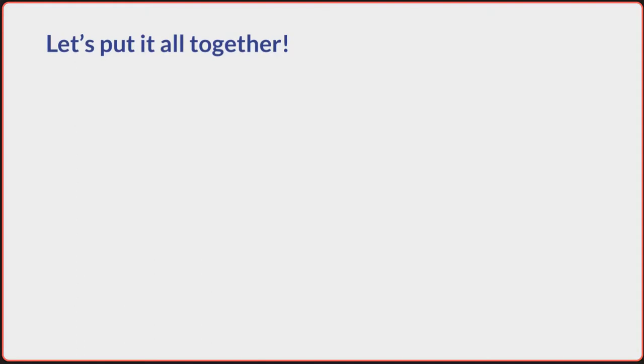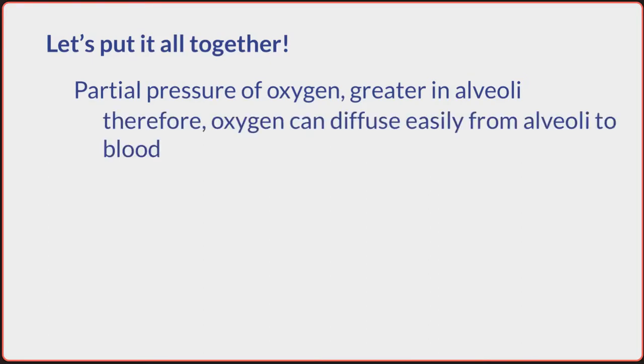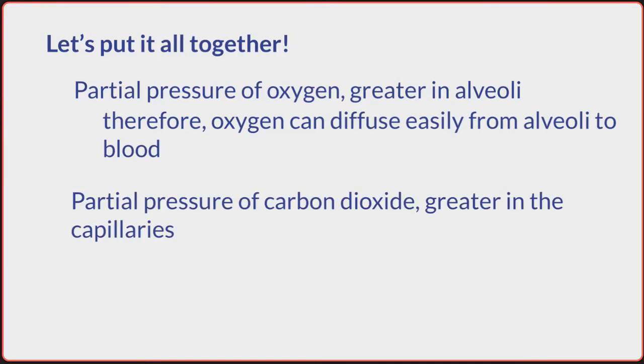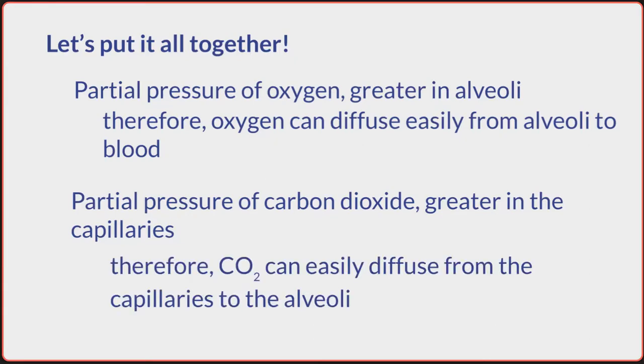So the basis for this gas exchange that occurs within the lungs is that the partial pressure of oxygen is greater within the alveoli, and so oxygen can move from the alveoli to the blood to be then carried on to the rest of the body. And the partial pressure of carbon dioxide will be greater in the blood because this is deoxygenated blood in those capillaries, and so the carbon dioxide will be greater there. And so carbon dioxide can then move from the blood into the alveoli to then be exhaled and removed from the body as waste.